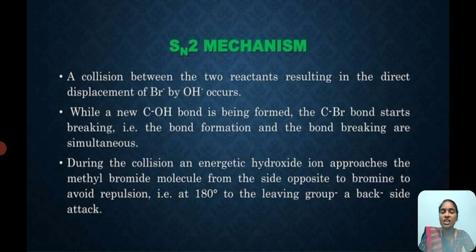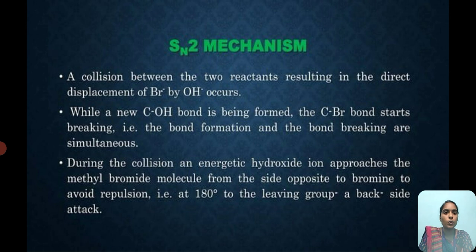It does not have any intermediate step. A collision between the two reactants results in direct product displacement. While a new C-O bond is being formed, the carbon-to-bromine bond starts breaking. The bond formation and the bond breaking are simultaneous.